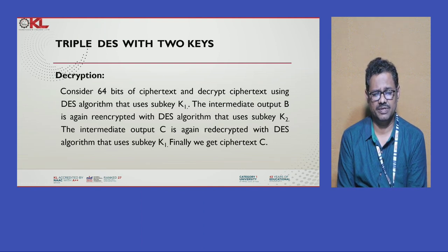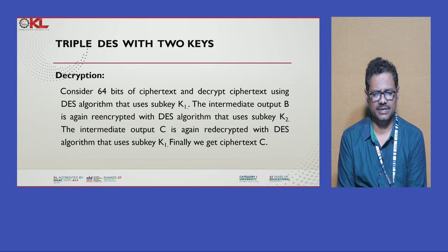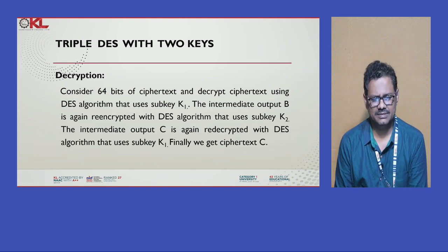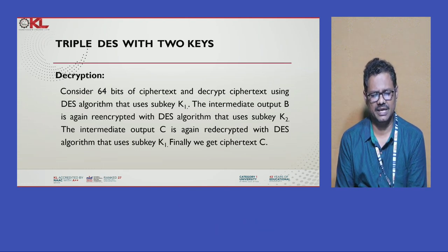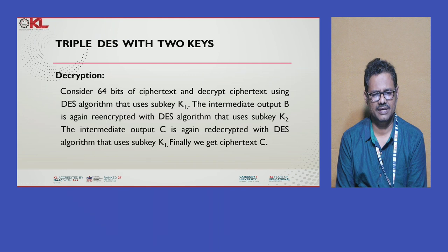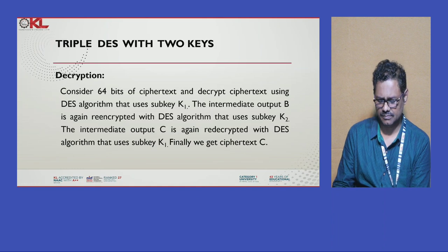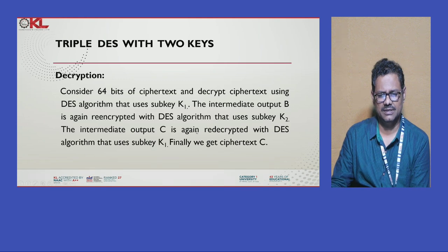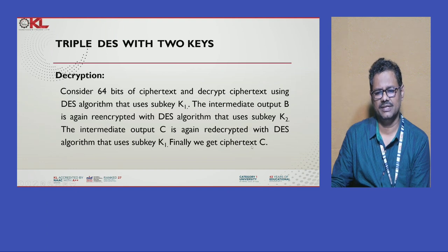To clarify: in encryption we apply K1, K2, K1 on the plain text through intermediate products, getting final cipher text C. In decryption, applying K1, K2, K1 in reverse order on the cipher text finally gives us the plain text. The separate text C that we get at the end corresponds to our plain text after complete decryption.